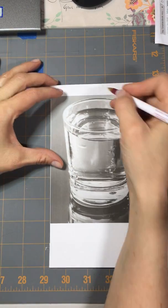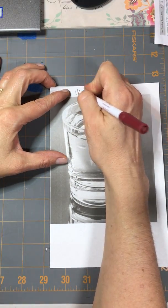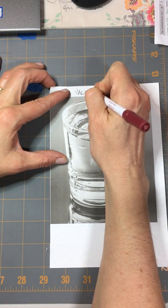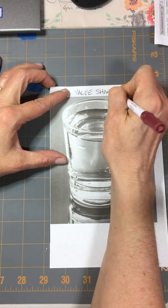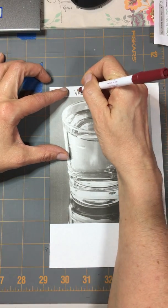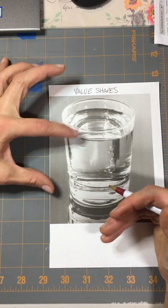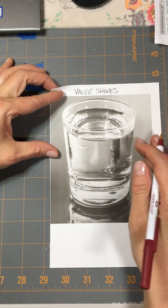We're going to talk about value shapes. Now you've looked at a value scale, and we're going to talk about when we draw that we are breaking something as complex as this glass of water into value shapes.